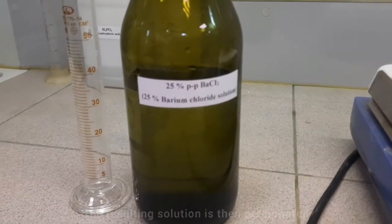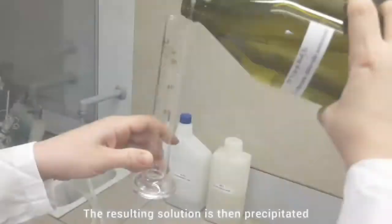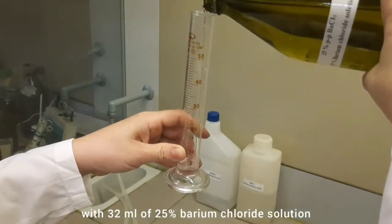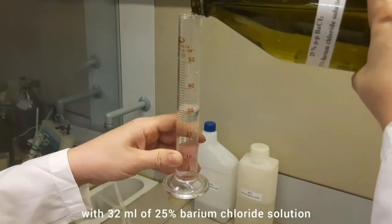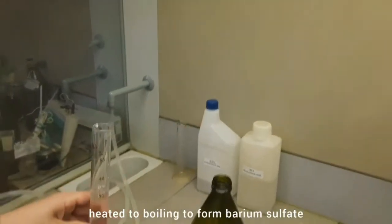The resulting solution is then precipitated with 32 ml of 25% barium chloride solution heated to boiling to form barium sulfate.